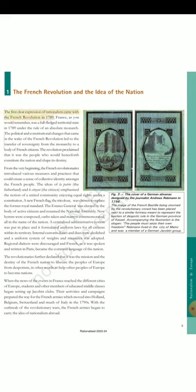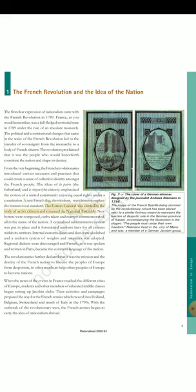Section 1: The French Revolution and the idea of the nation. The first clear expression of nationalism came with the French Revolution in 1789. France was a full-fledged territorial state in 1789 under the rule of an absolute monarch. The political and constitutional changes that came in the wake of the French Revolution led to the transfer of sovereignty from the monarchy to a body of French citizens. The revolution proclaimed that it was the people who would henceforth constitute the nation and shape its destiny. From the very beginning, the French revolutionaries introduced various measures and practices that could create a sense of collective identity amongst the French people. The ideas of 'La Patrie' (the fatherland) and 'Le Citoyen' (the citizen) emphasized the notion of a united community enjoying equal rights under a constitution.